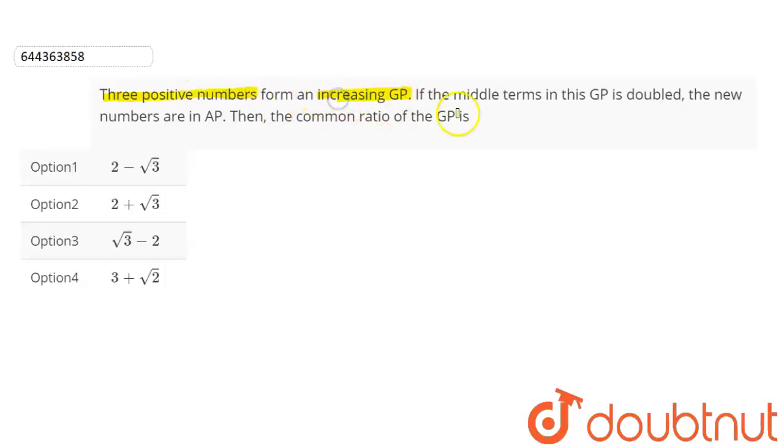an increasing GP. If the middle term of this GP is doubled, the new numbers are in AP. Then the common ratio of the GP is, and we are given four options. So if we consider the numbers to be